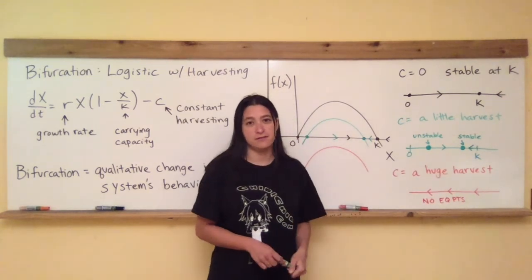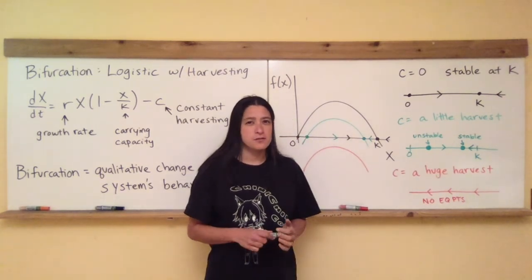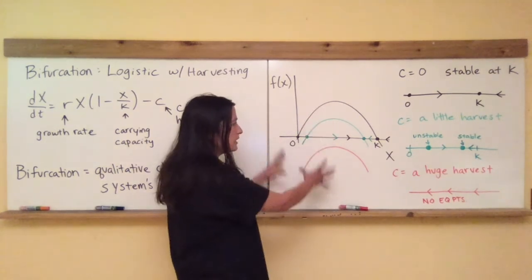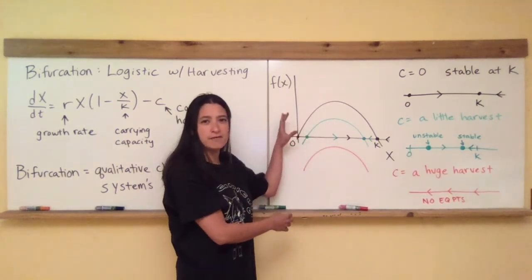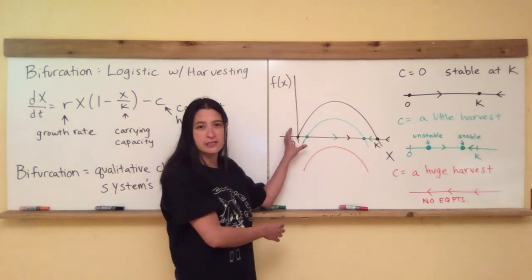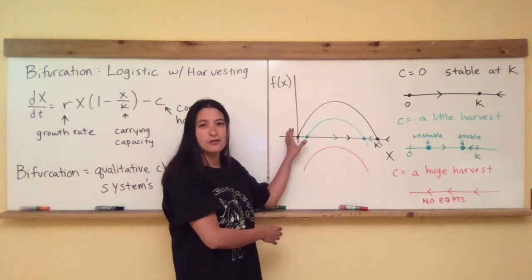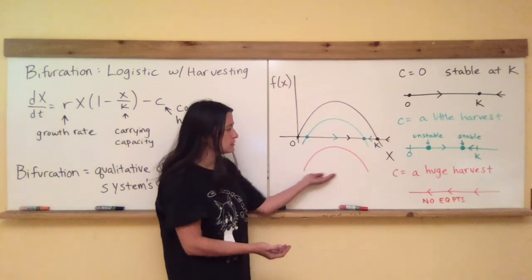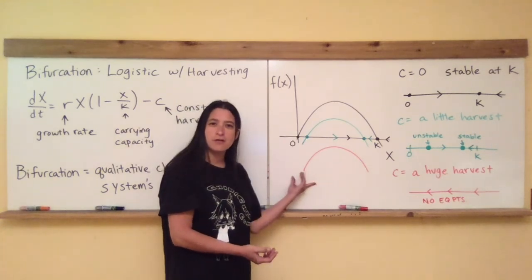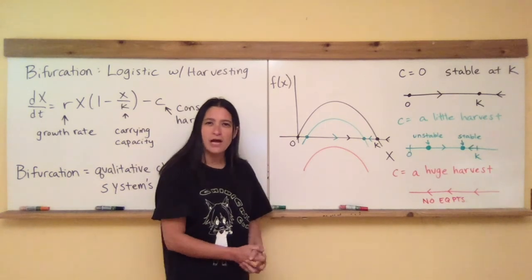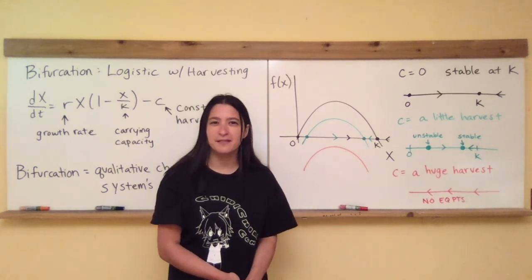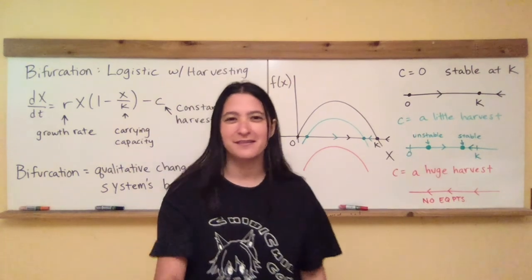So a bifurcation occurred somewhere, somewhere in here between having two fixed points where the parabola intersected the x-axis twice and having no fixed points where there's actually no roots, no zeros for this anymore. How did that bifurcation happen? Exactly where did it happen? Maybe a topic for another video. Thanks a lot.